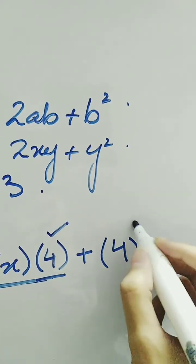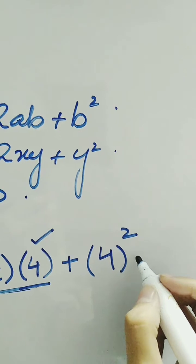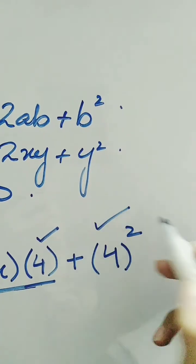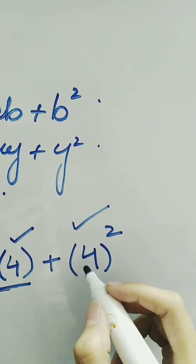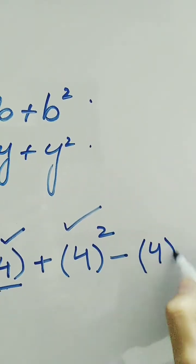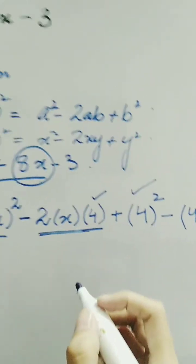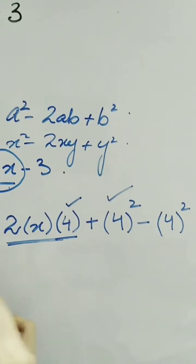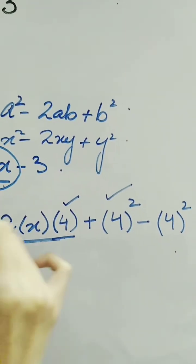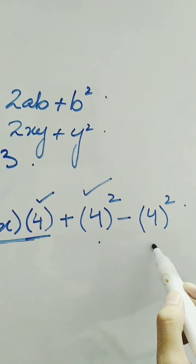So we make a square of 4 here, and at the same time, since we are only using this expression, we add this term and also subtract this term so that the overall value of the expression is unchanged. These added and subtracted terms cancel out with each other.